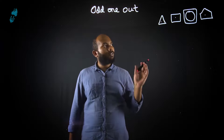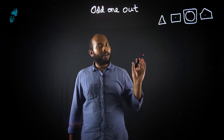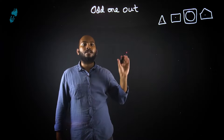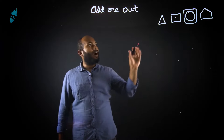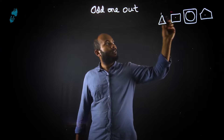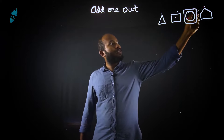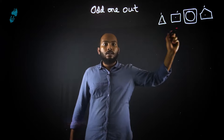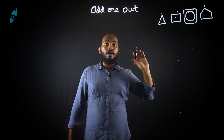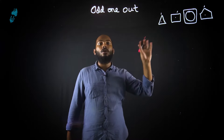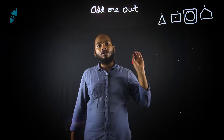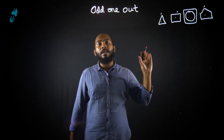So basically what we have done? We have identified a relation — a relation between three figures that the fourth figure does not follow. So it is odd. It does not have the same relation.